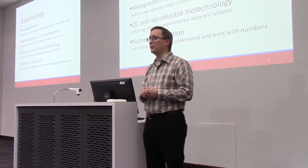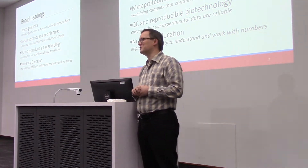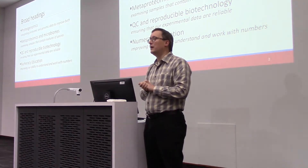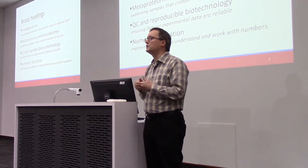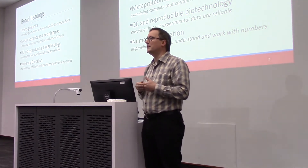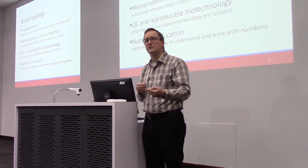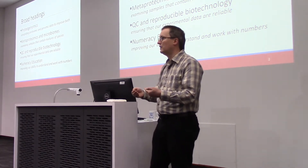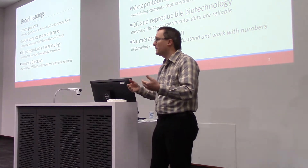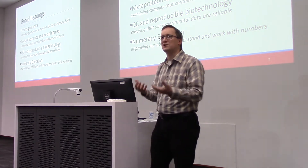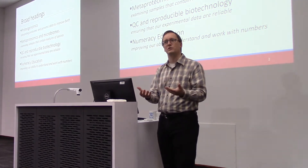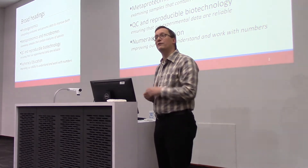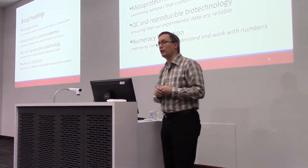The first of these is proteogenomics, which is yet another omics that you need to know about. It's really the merger of two: the idea being that if we can do proteomics from a species and we can do genomics from a sample, we might see some way that these two data sources can improve each other. I'll talk about four examples that fall within that category.